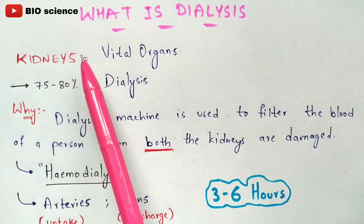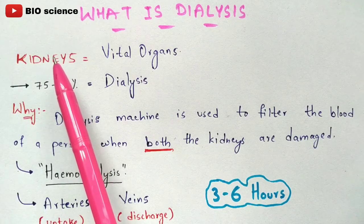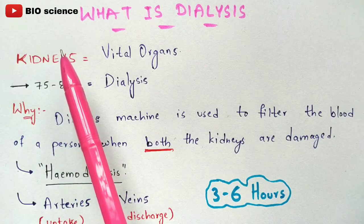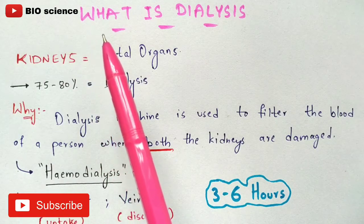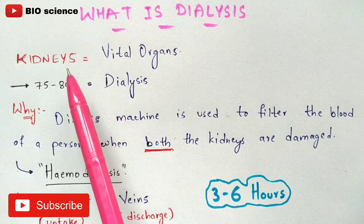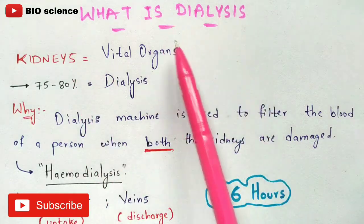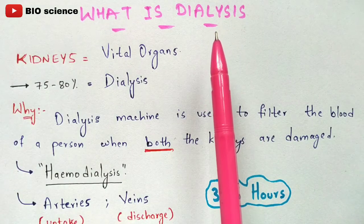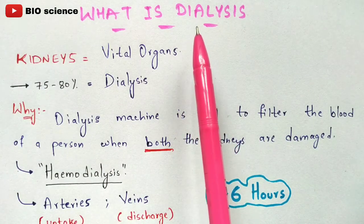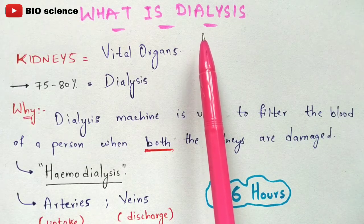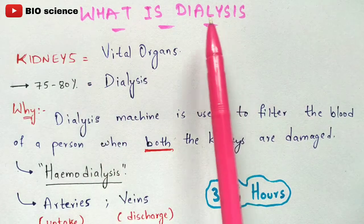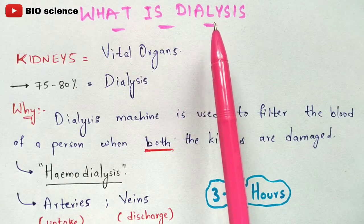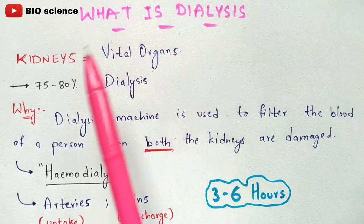If the kidneys fail in their functioning, toxic substances will accumulate in the blood with no purification occurring, and the patient will lead to death or coma. To prevent that, a process has been invented called dialysis. This dialysis process is also called an artificial kidney, because it performs the same function as a kidney — purification of the blood.